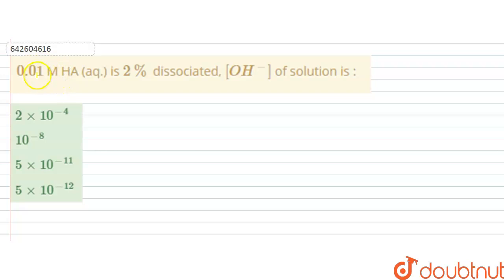Hello students, the question is: 0.01 molar HA aqueous is 2% dissociated. OH negative of solution concentration is? So in this question, we are given that 0.01 molar of HA, that is acidic solution is given aqueous. It is 2% dissociated, we have to calculate the concentration of OH negative of this.